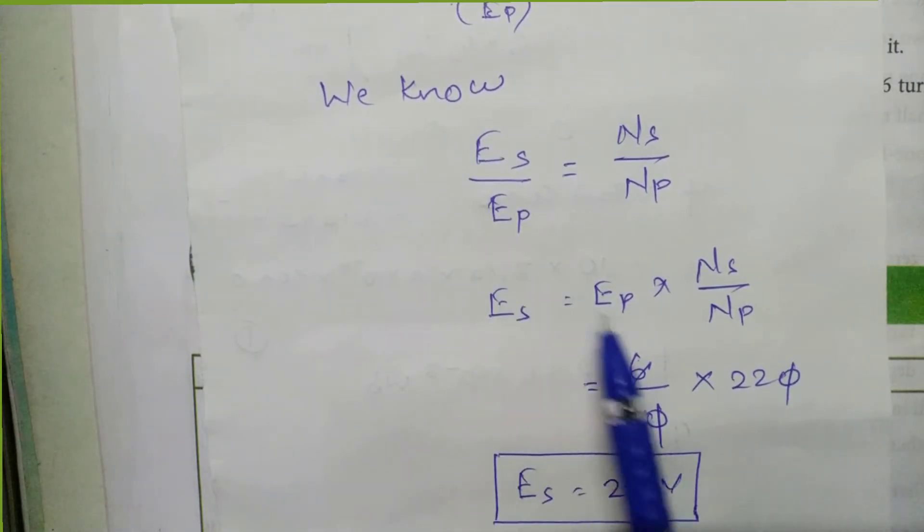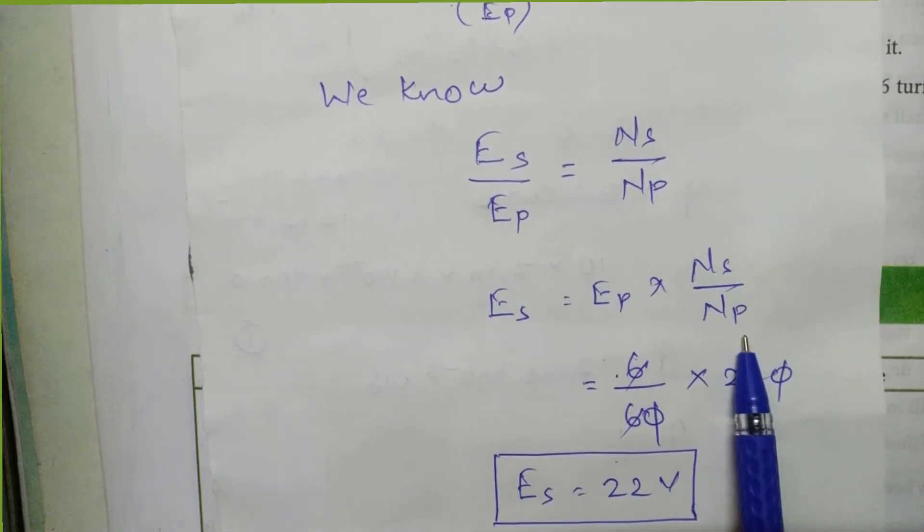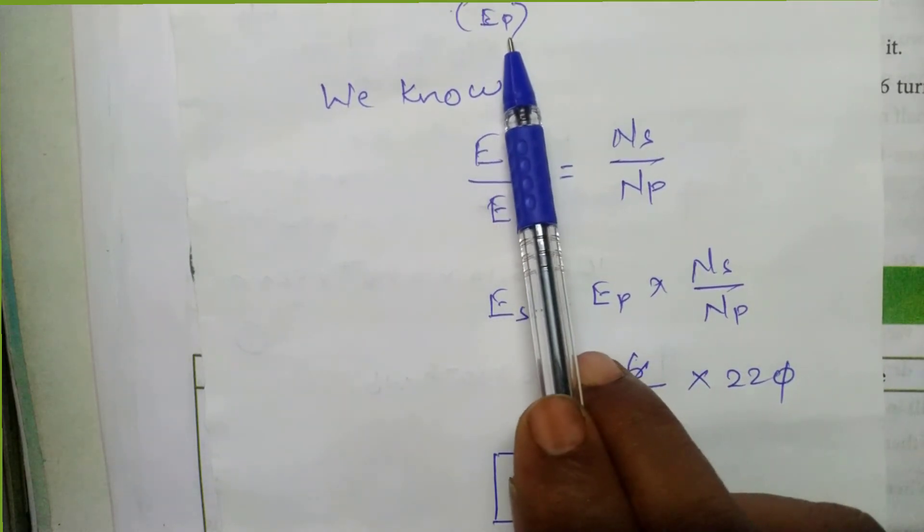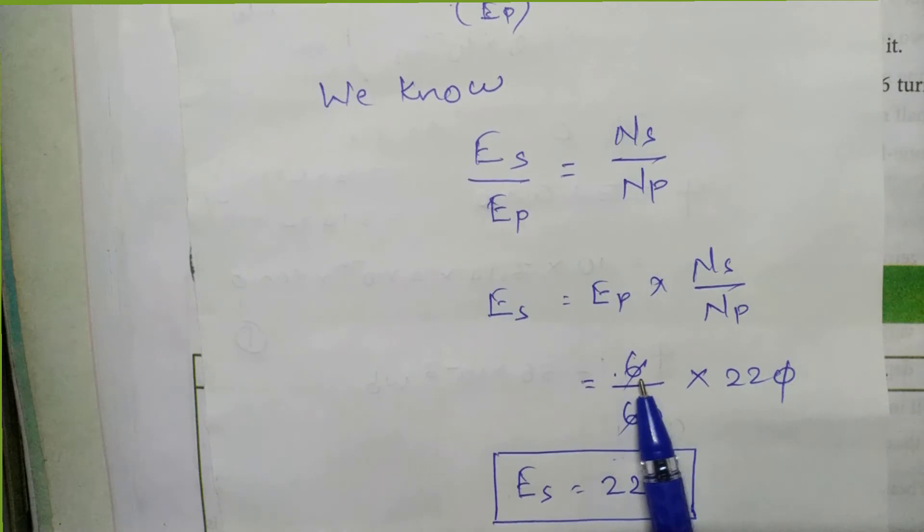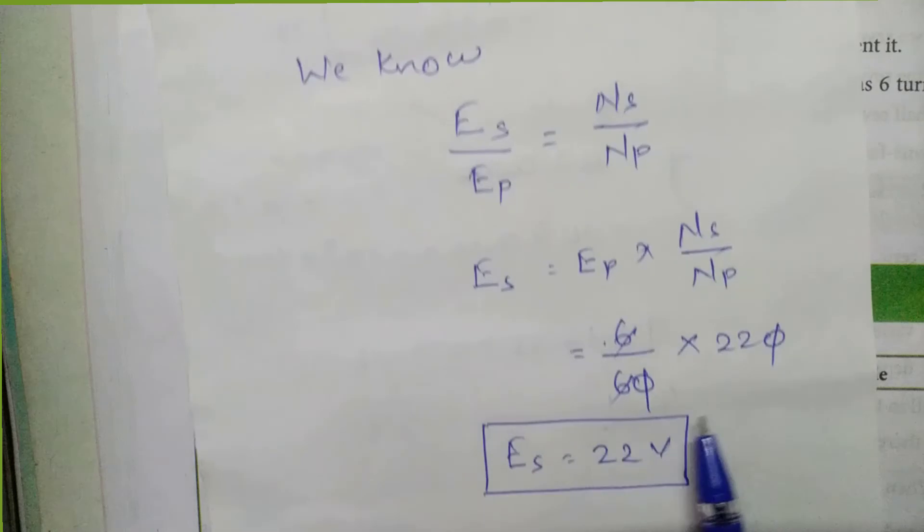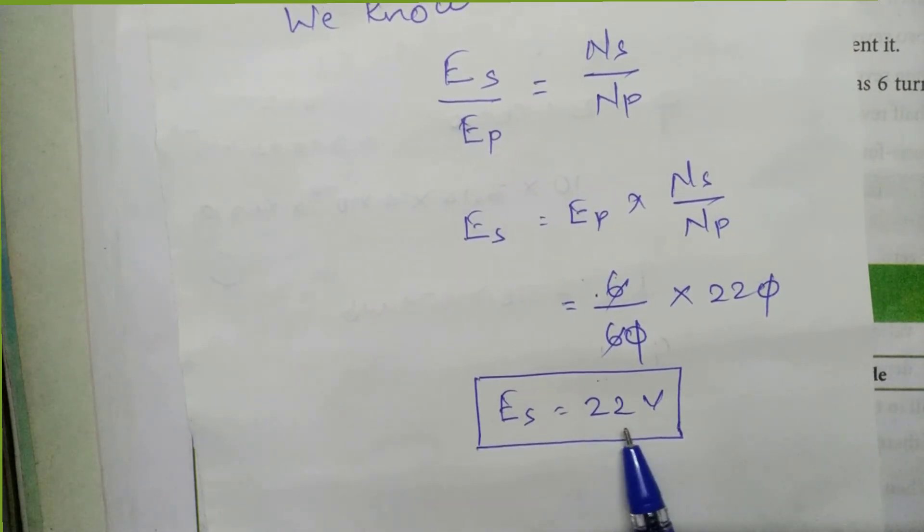Es by Ep is equal to Ns by Np. Es is equal to Ep into Ns by Np. Then what is the value of Ep here? It is 220. Ns is 6 and Np is 60. Then strike out all those values. Then you will get Es is equal to 22 volt.